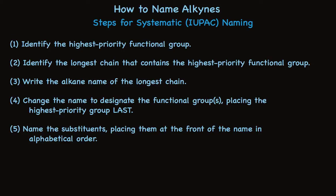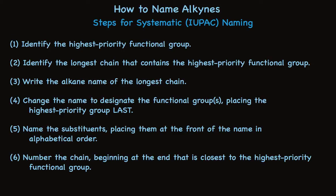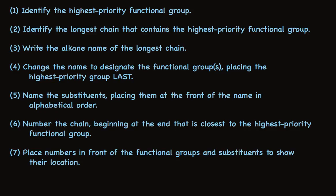Once you've done all that, you identify any substituents that are attached to that longest chain. You name them and place them at the front of the name in alphabetical order. Then you need to number the chain so you can use those numbers to designate where the substituents are and where the functional groups are. Then you place the numbers in front of the functional groups and the substituents to show where they are. And finally, if there are any stereochemical designations that need to be made, you put them way in front of the molecule.